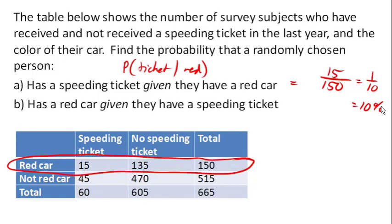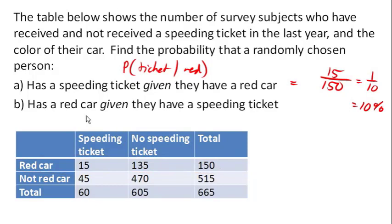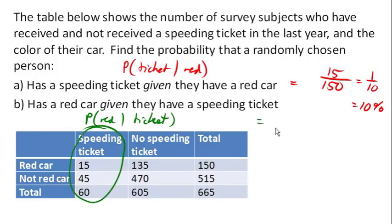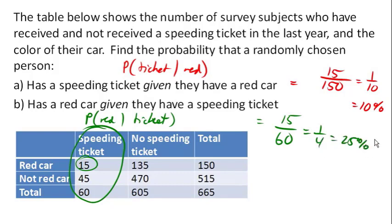A different question: what's the probability that they have a red car, given that they have a ticket? This is not the same thing, because now we're limiting ourselves to the 60 people who got a speeding ticket. How many of them had a red car? 15 of them. So 15 out of 60, or 1/4, or 25% of people with a speeding ticket had red cars. It is important to notice that the order matters — it does matter which piece of information you're given.